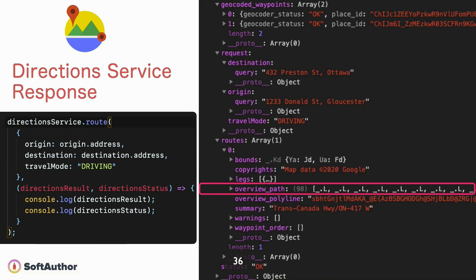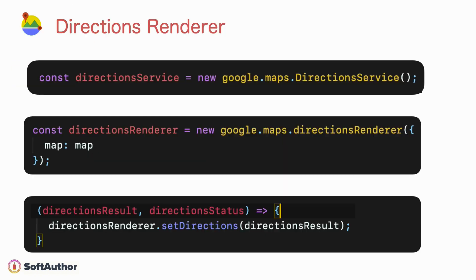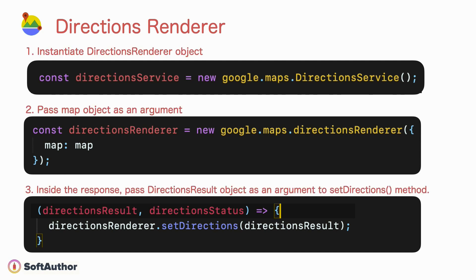Using DirectionsRenderer, we can easily display the directions path on the map in just three steps: first, create a DirectionsRenderer object; second, add it to a map where it needs to be rendered; and finally, tell the renderer what to render — in this case, the directions result specified in the callback function parameter.